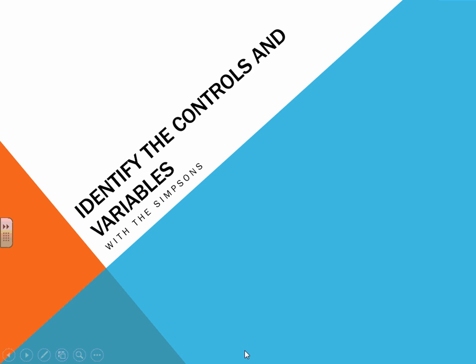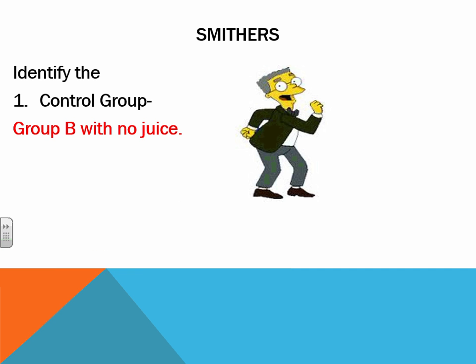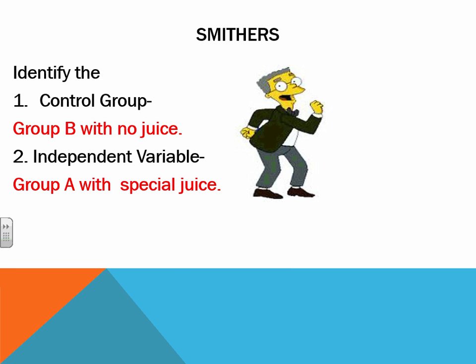We're going to identify the controls and the variables with the Simpsons. We're looking at Smithers. Identify the control group — it would be group B that had no juice. The independent variable, remember that's the treatment, is going to be group A with the special juice.